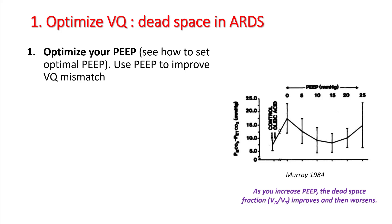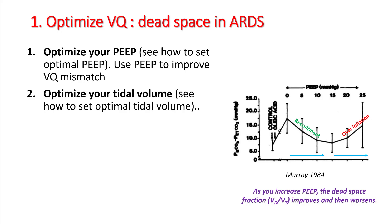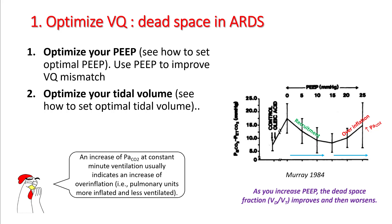As shown in this figure, as you cause recruitment, your dead space fraction is going to improve. After you have achieved maximum recruitment, you will start going towards over-inflation, and when you over-inflate, your PaCO2 increases. So if you are seeing an increase in PaCO2 at a constant minute ventilation, this usually indicates that you are on the over-inflation side.